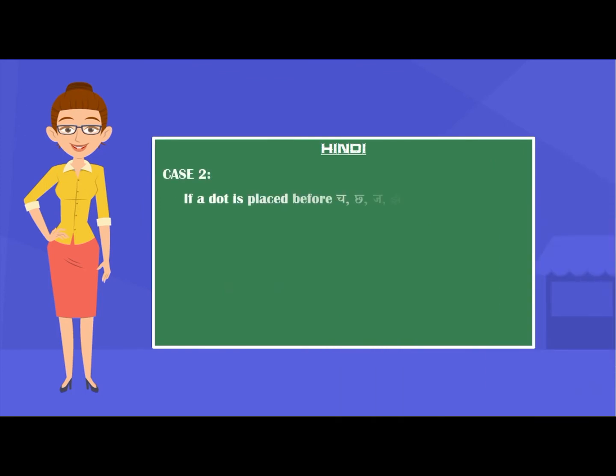Case 2: If a dot is placed before Ch, Ch, J, J in a word, then it is pronounced as 'ing'. For example: Kanj, Anchar, Pungajamukhi and Janjat.